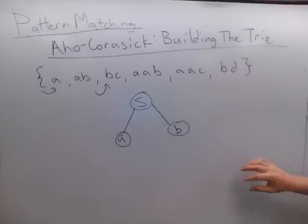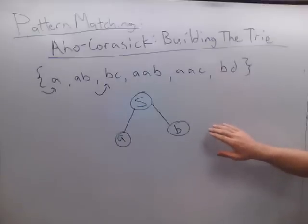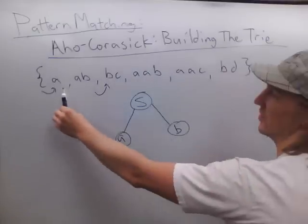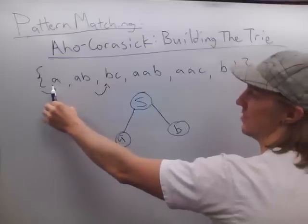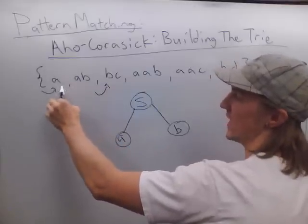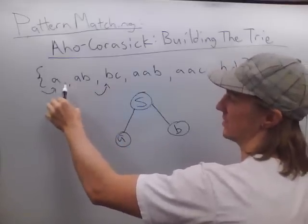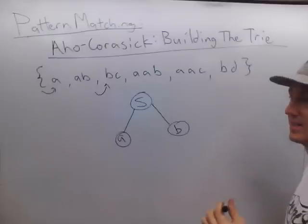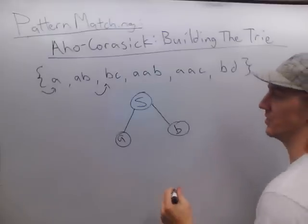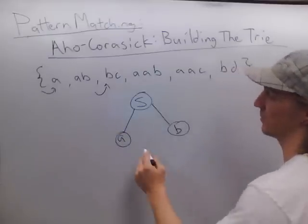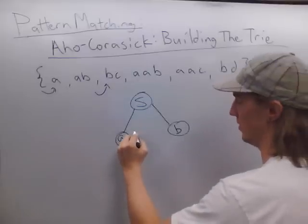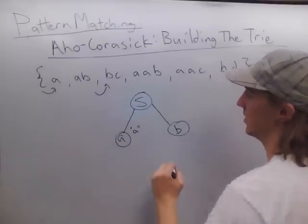Now, the nodes also have a special characteristic where they have an output. If I have an entire word ending — an entire word from my dictionary ending at a certain node — I'm going to list that as output. So this node represents an entire word from my dictionary, so it's going to have an output of A.